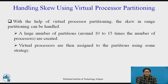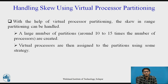How are we going to handle skew using virtual processor partitioning? With virtual processor partitioning, skew in range partitioning can be handled. A large number of partitions — around 10 to 15 times the number of processors — are created, and virtual processors are then assigned to individual partitions using some strategy. This way, skew can be avoided or handled.